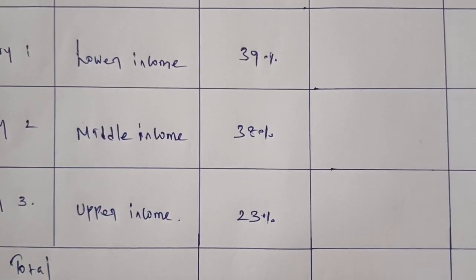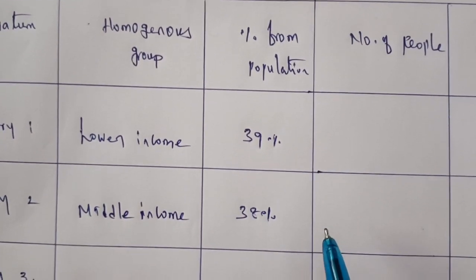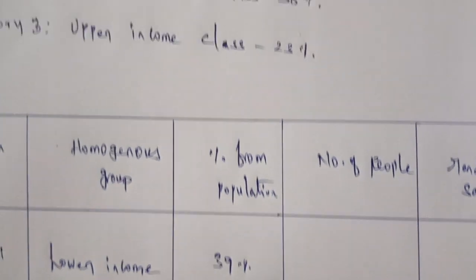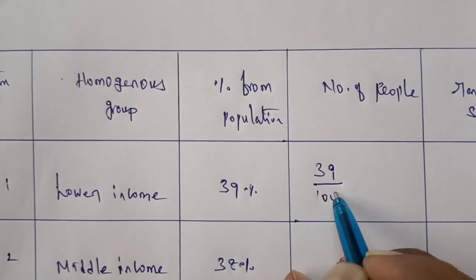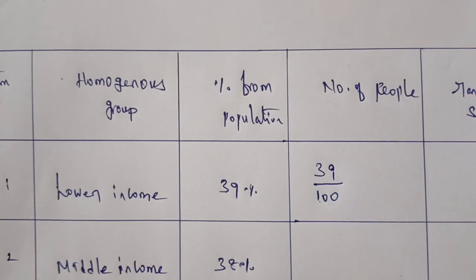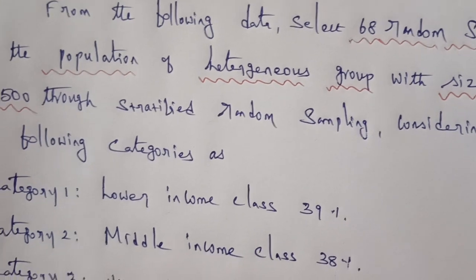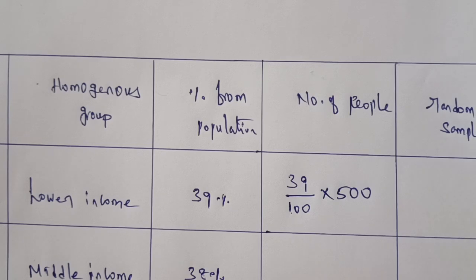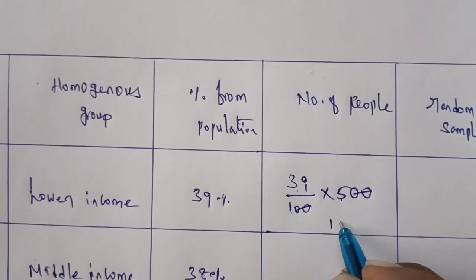The table shows the number of people per category. First, look at the percentage from population. Lower income is 39%, so the percentage is 39/100. The population size is 500, so the number of people in lower income is 39 × 5 = 195.